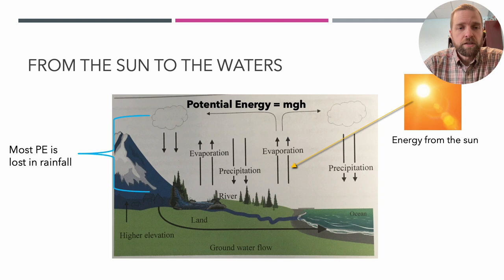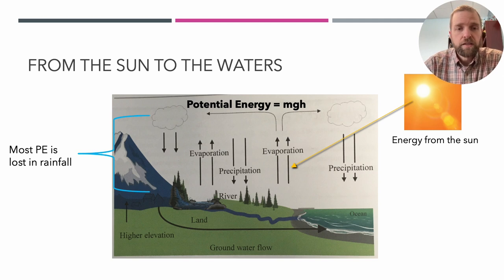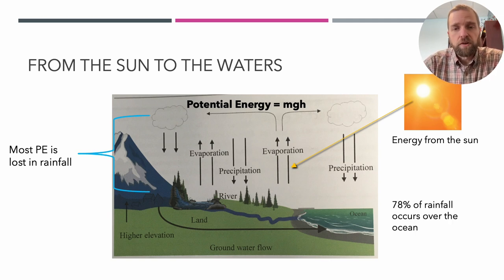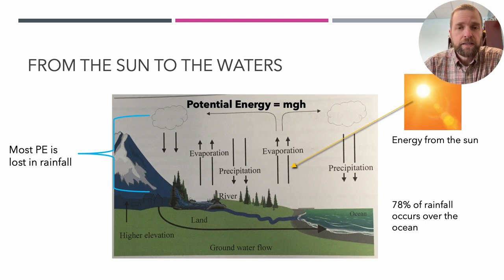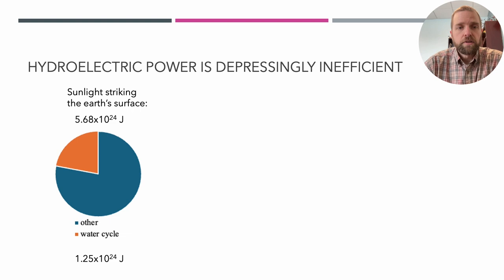When rain falls back to Earth, most of the potential energy is lost as it moves from clouds at around 10,000 feet down to land at around 1,000 feet. In addition, 78% of rainfall occurs over the ocean, so most precipitation goes right back to sea level and the potential energy is lost there.